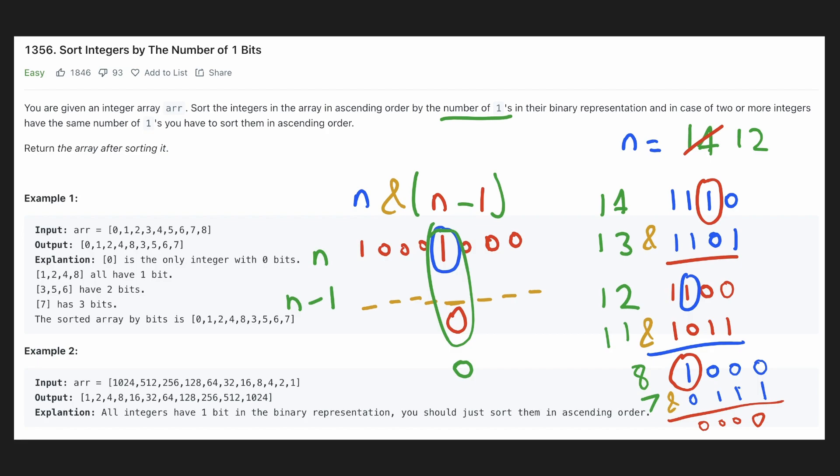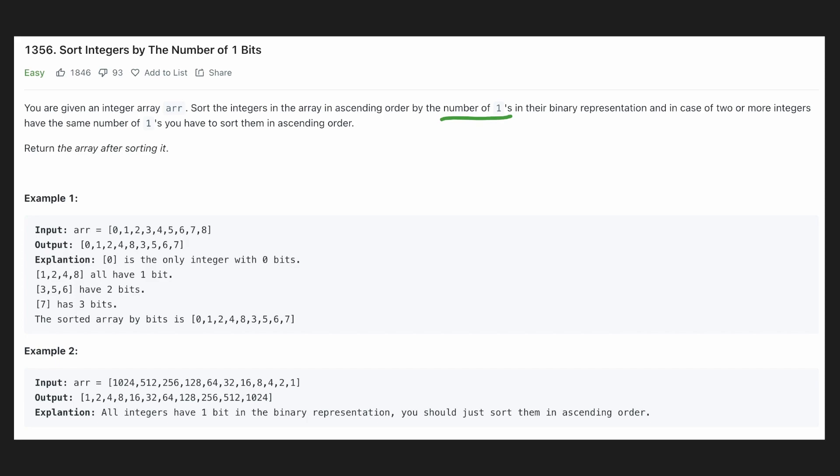Hence starting from the right, for each one bit, if we repeat this process, we will get 0 finally. And the number of times we have to do that will be the number of ones. So now we have figured out how to count the number of ones in an integer. Let's use that to solve our problem. We see that we have to find all the numbers with the same number of ones and somehow we have to maintain them as a group. And finally we have to sort these numbers within that group.